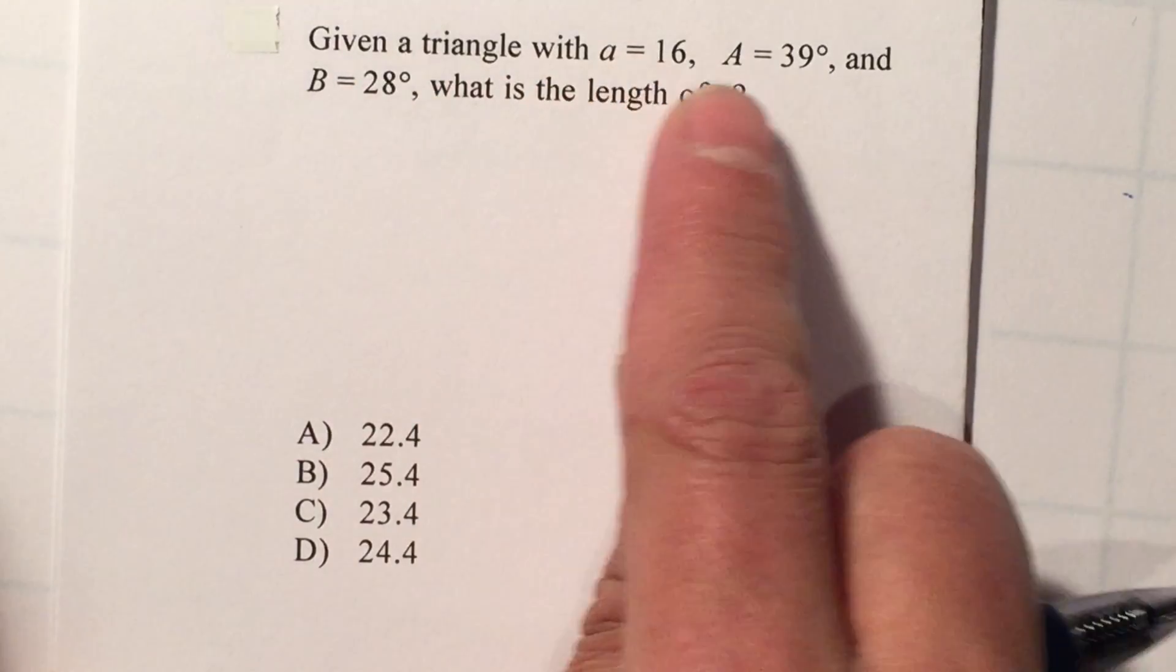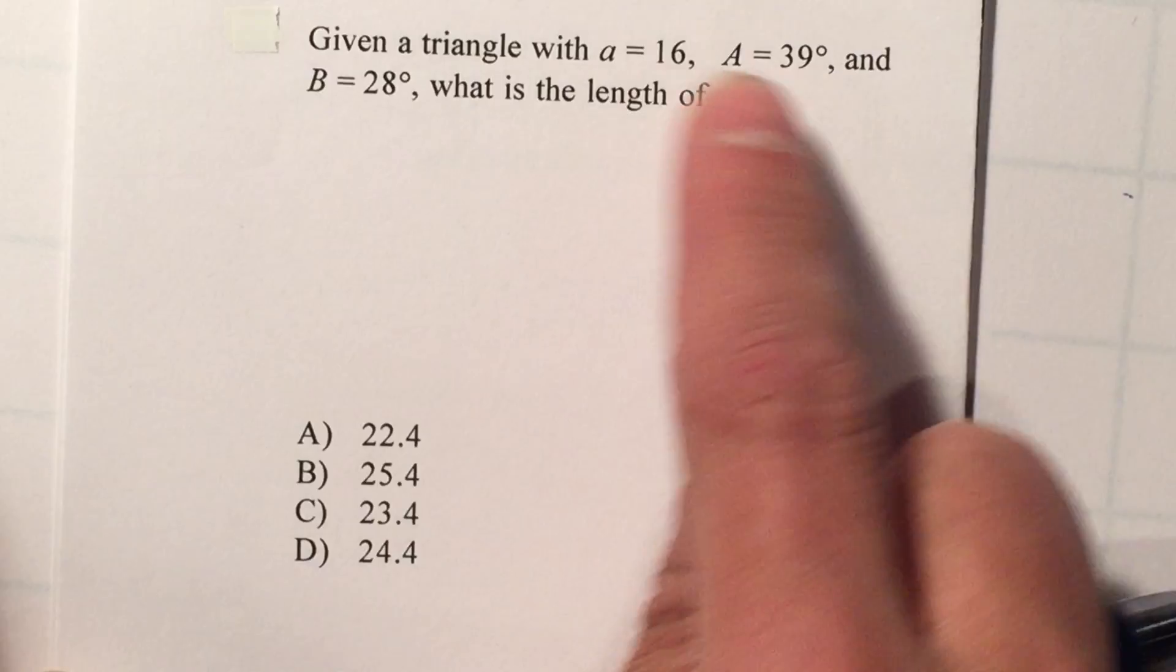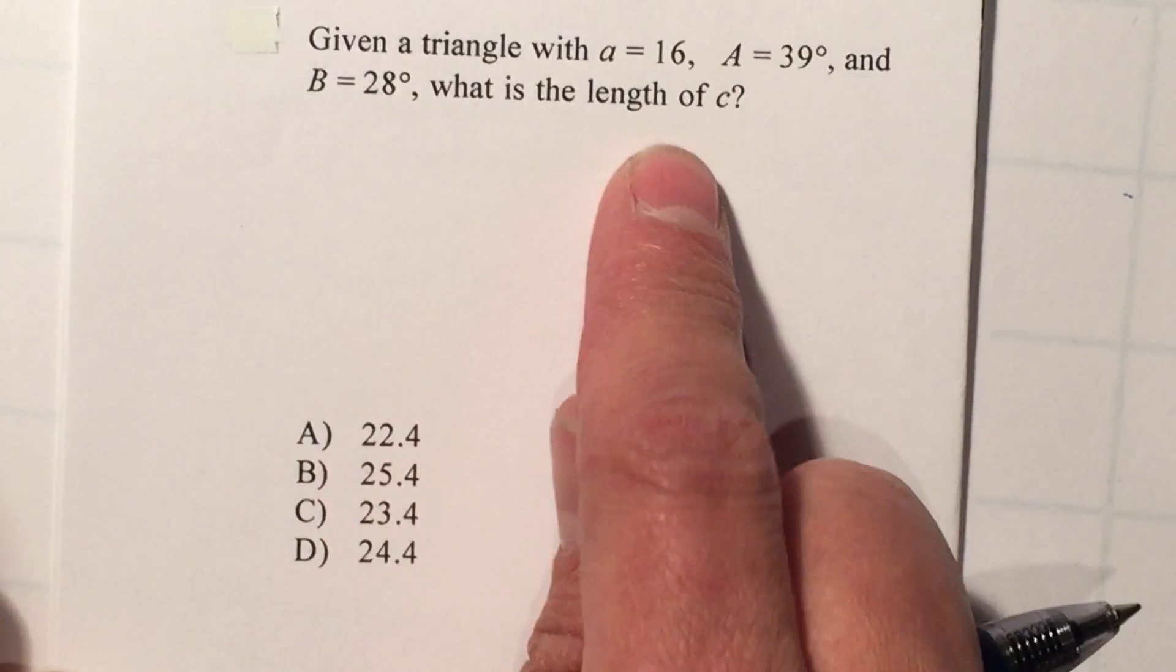Given a triangle with A equal to 16, angle A is 39 degrees and angle B is 28 degrees, what is the length of C?